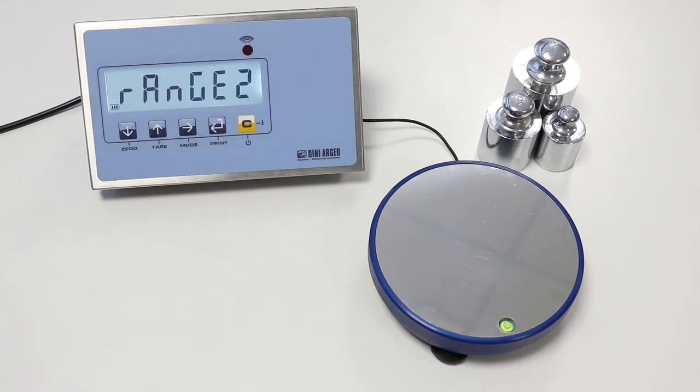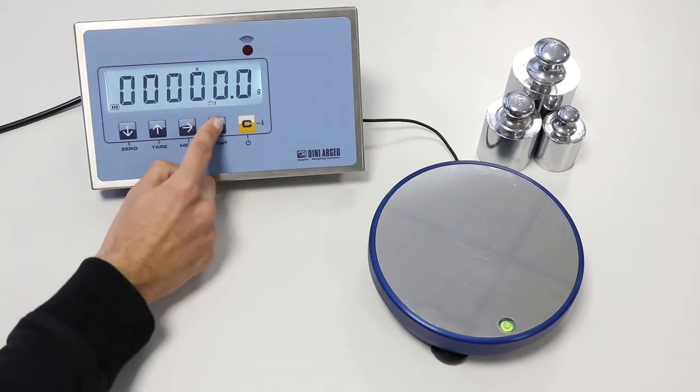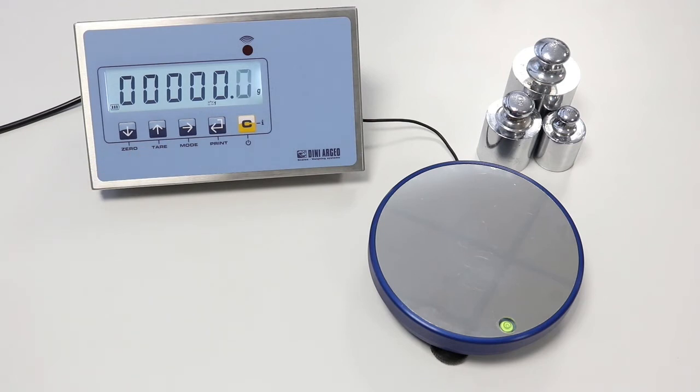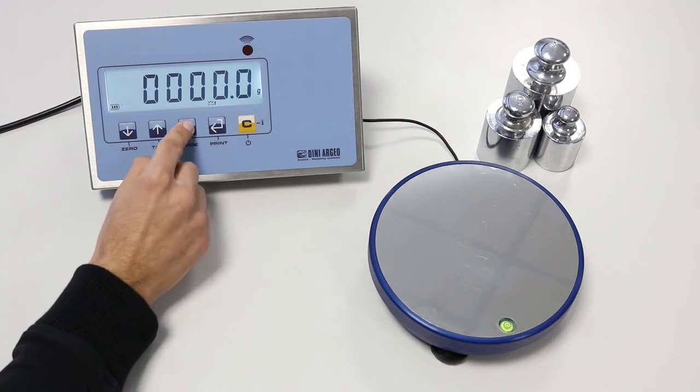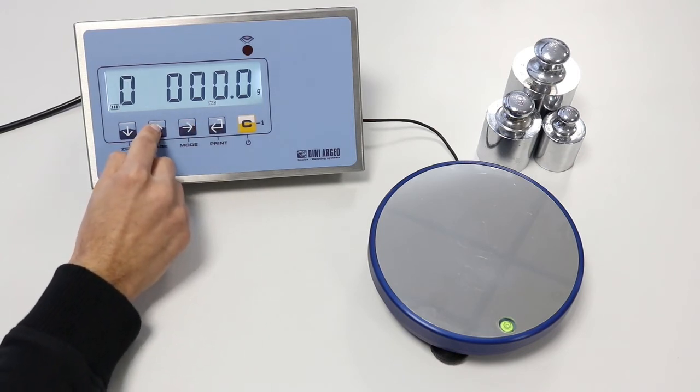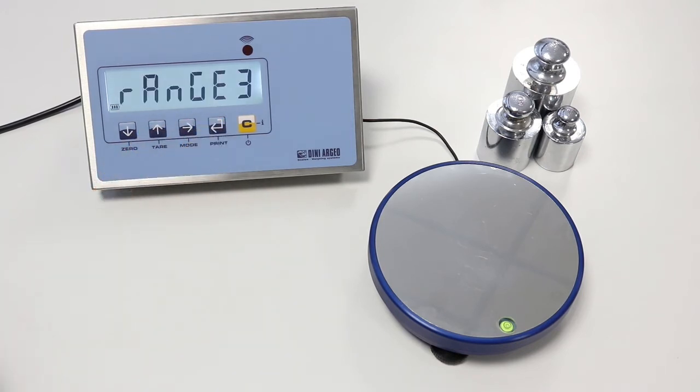Range 2 has to be programmed only in case of multi-range scales. It is the second range. For our example, we need to set it to 3000 grams. Range 3 is needed only for multi-range scales. It is the third range. We do not need it for our example, so we skip it.